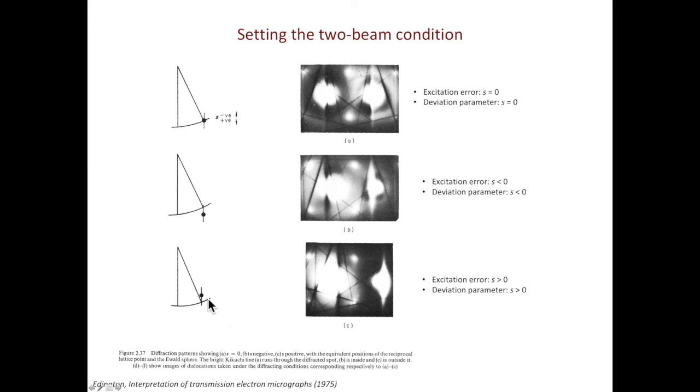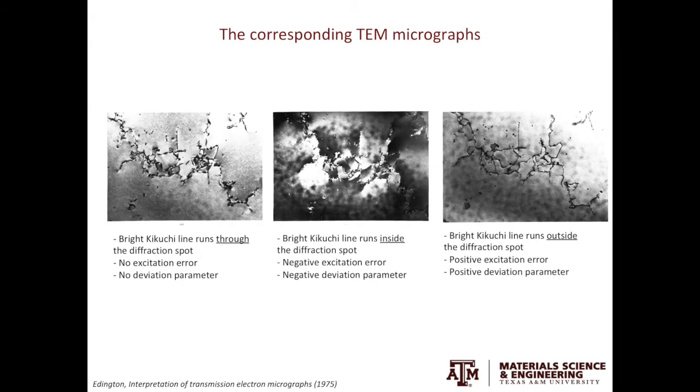Then, what do dislocations appear in micrographs when we image them under these three conditions? The image on the left has zero excitation error, zero deviation parameter. The image is not too bad, but the strain field from the dislocations are highlighted, especially the lattice distortion around dislocations.